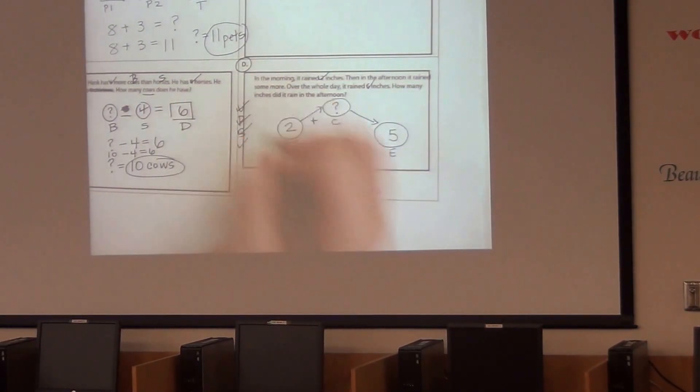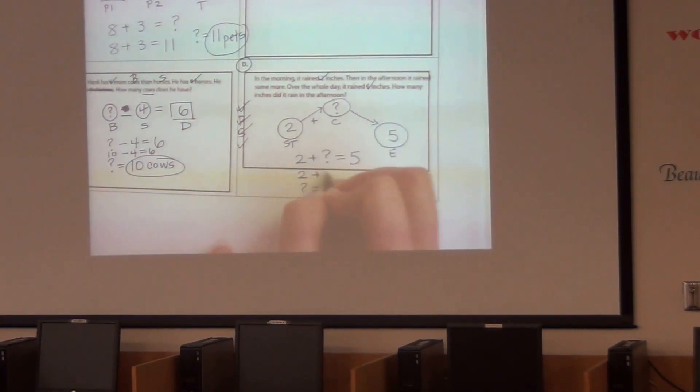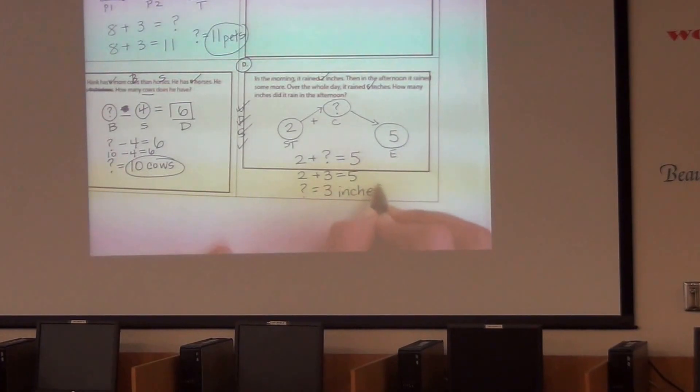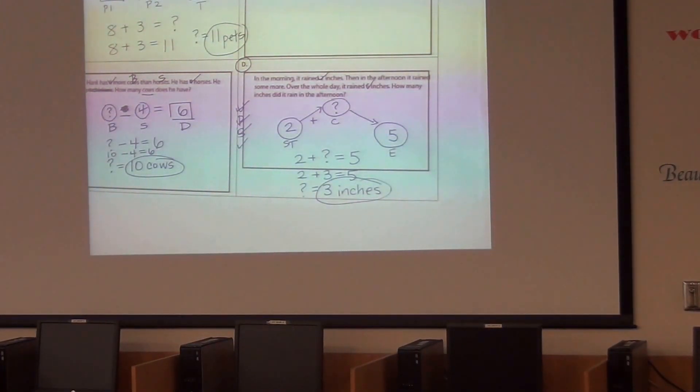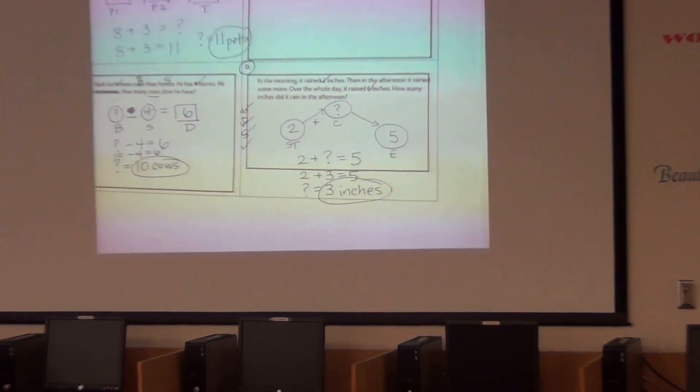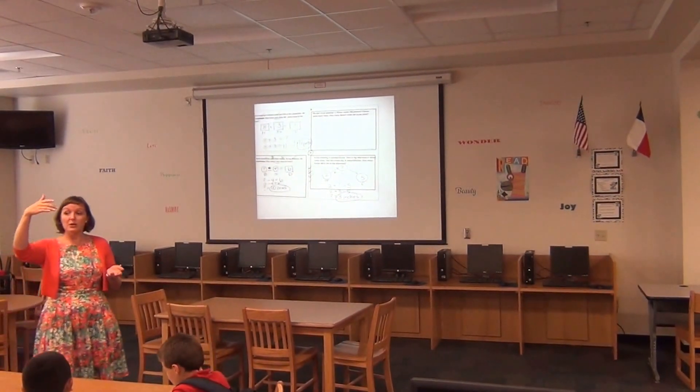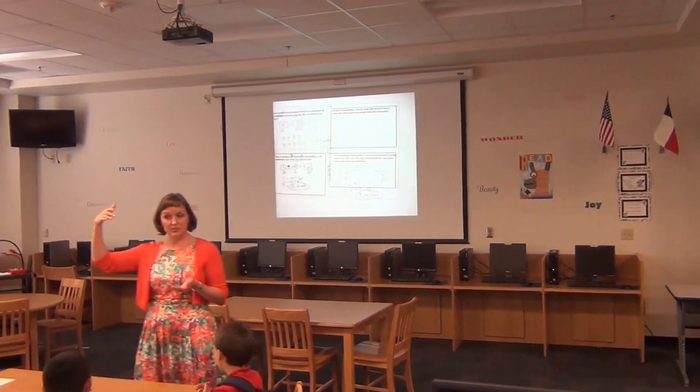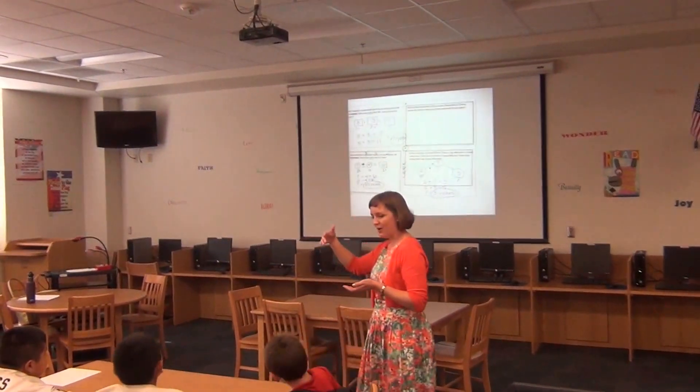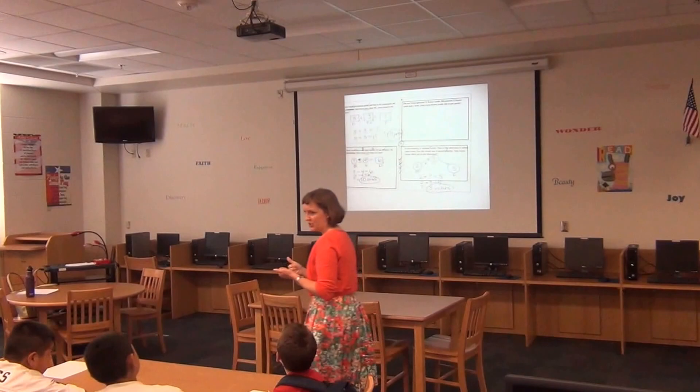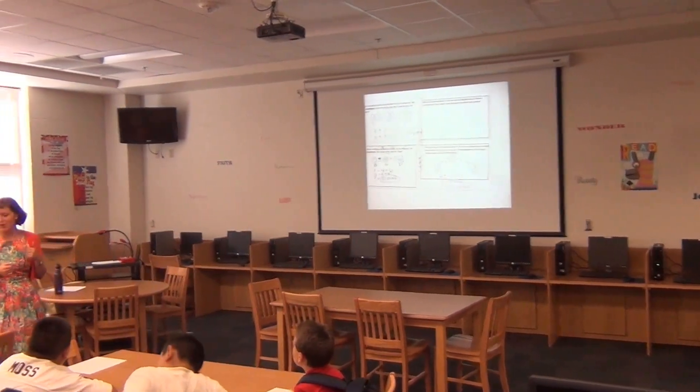We solved the problem and now I'm going to check it. Two plus three equals five. Is that correct? Yes. Our answer is reasonable. And I'm just going to draw a circle around that so my teacher can find it. How much did it rain in the afternoon? Three. Let's go back and see if that makes sense. It rained two inches in the morning, and then it rained three more inches in the afternoon. So does it make sense that it rained five inches across the whole day? Yeah. We solved our first change problem.